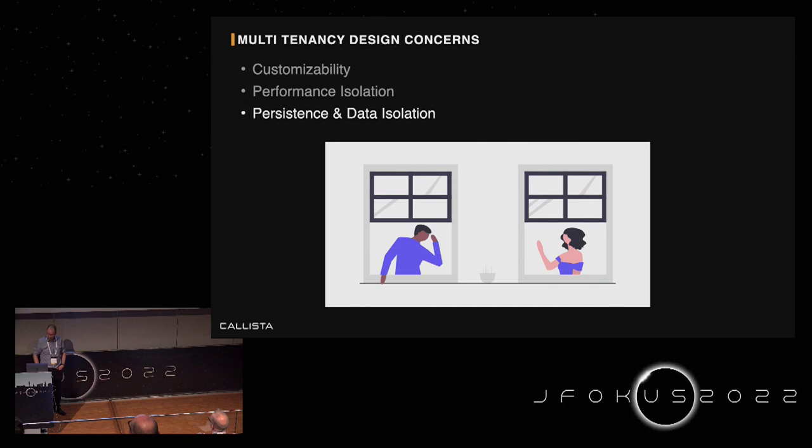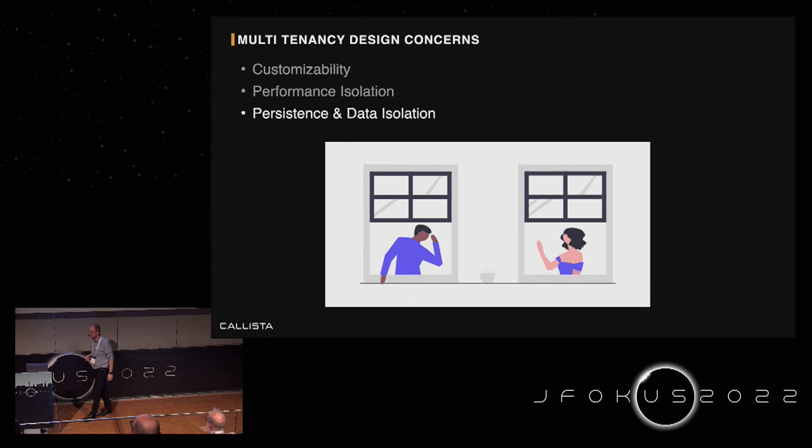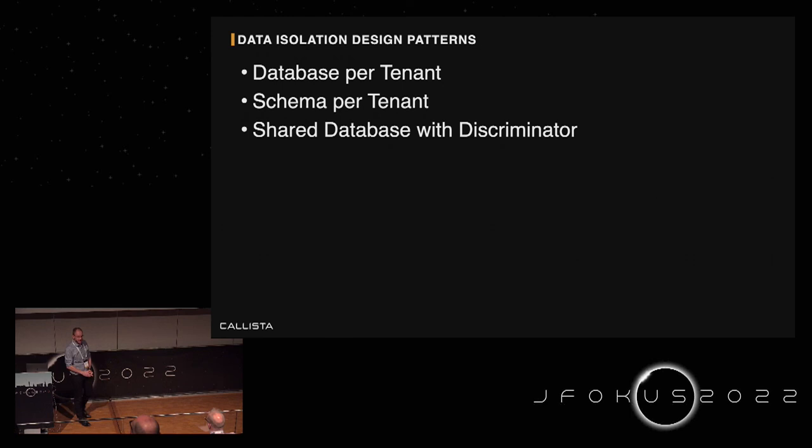The major area that needs to be addressed is data isolation — isolating customer and tenant data from each other, logically or physically. Here we have a number of well-proven design patterns which we will dig into in detail.